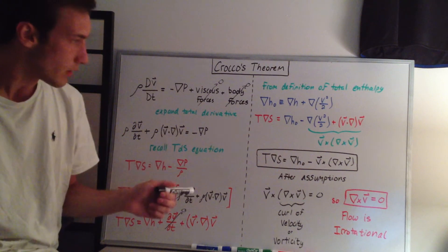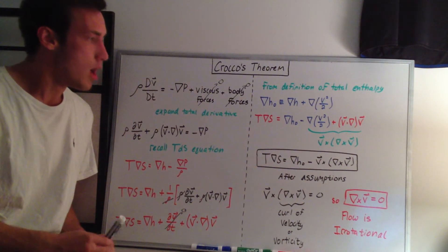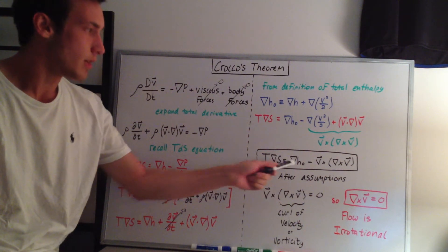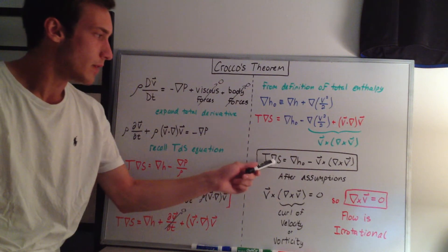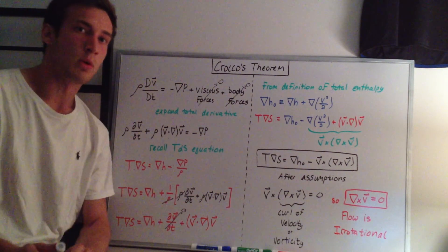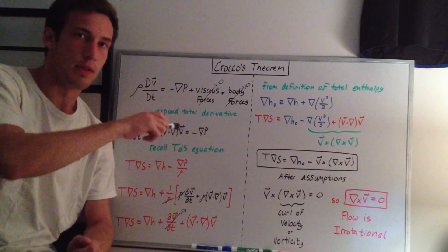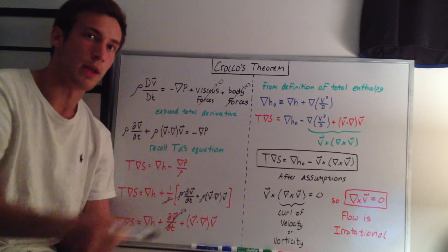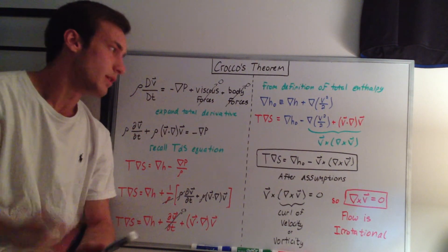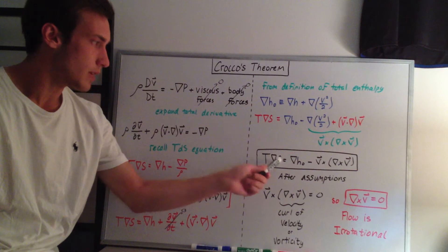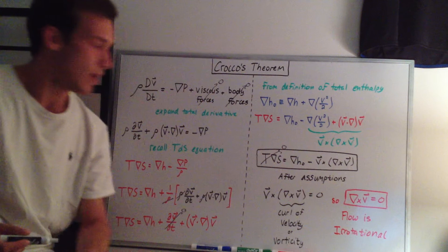Luckily though, based on our assumptions and our flow, we end up having that the gradients of entropy and the gradients of total enthalpy end up being zero. The gradient of the entropy is equal to zero because the shock wave is straight, so that at any point in the shock wave where the flow is going through, the entropy change is going to be the same. So the gradient of the entropy is zero. This dS is equal to zero, so this goes to zero.